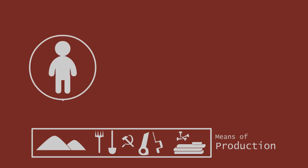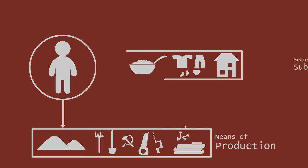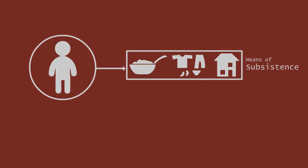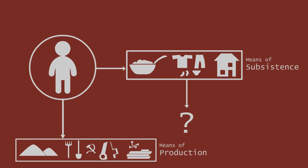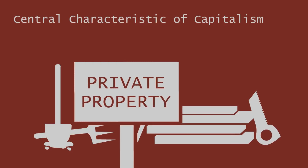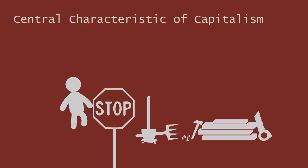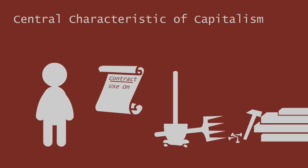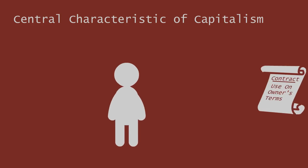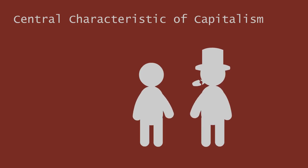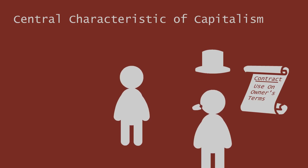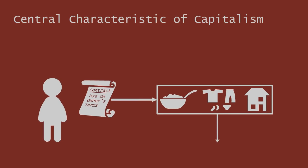This is important. Notice that if you have access to the sufficient means of production, you can produce some of your own means of subsistence. But having the means of subsistence does not allow you to produce anything if you have no access to means of production. Here is a central characteristic of capitalism: people can own the means of production, meaning other people either aren't allowed to use it, or must use it on the owner's terms. So if you don't own any means of production, you must arrange a deal that is satisfying to someone who does, in order to get your means of subsistence, and thus survive.